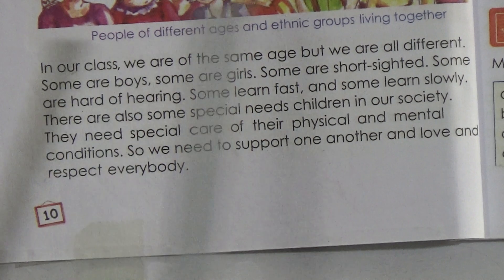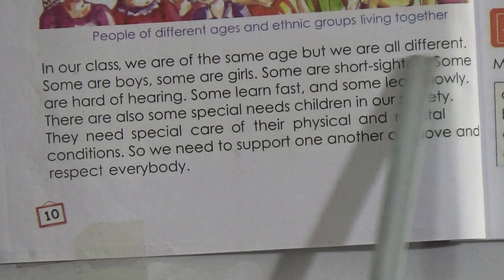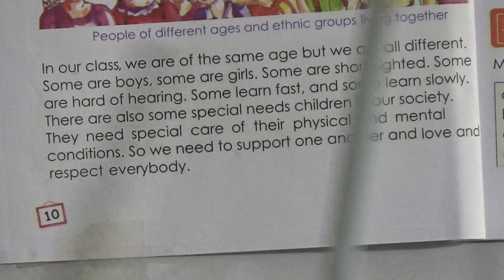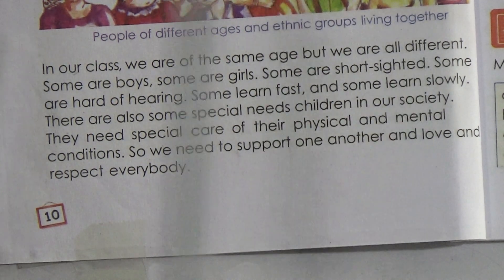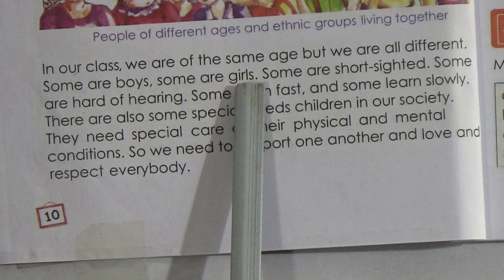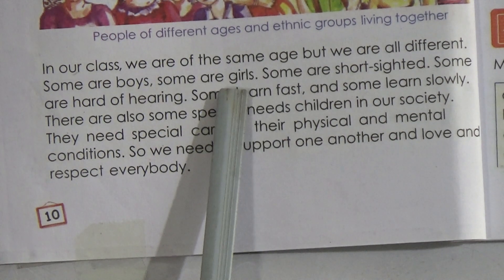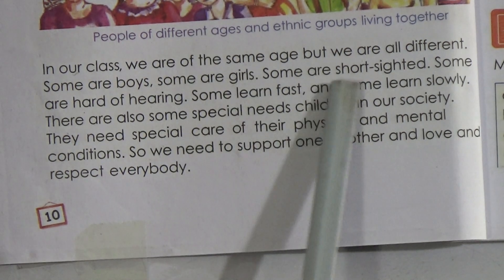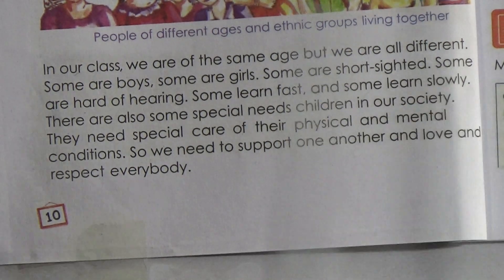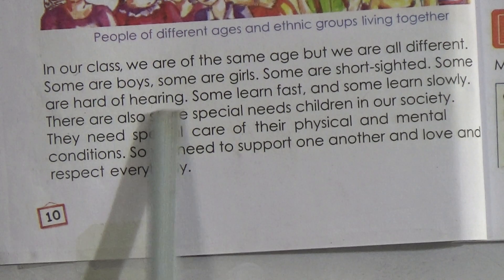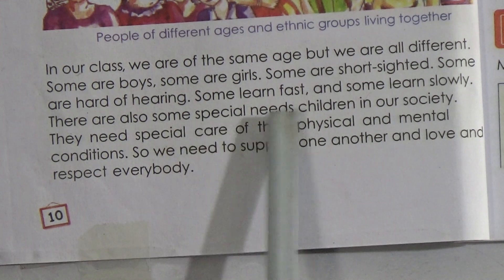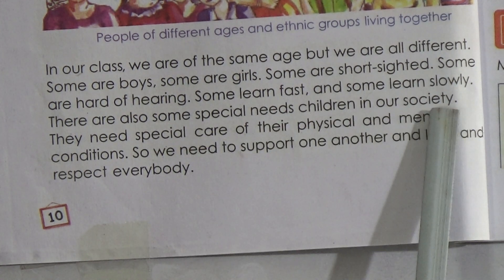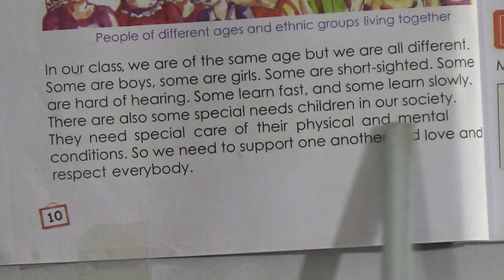In one class, suppose you are in Class Three — all the girls or boys are most likely the same age, but you are different from each other. Some are boys and some are girls. Some are short-sighted, some are hard of hearing, some learn fast and some learn slowly.